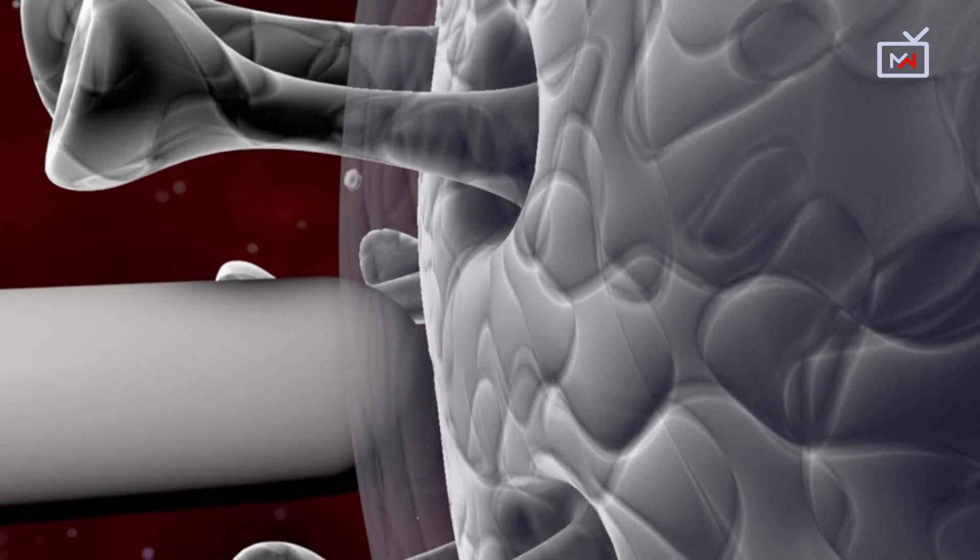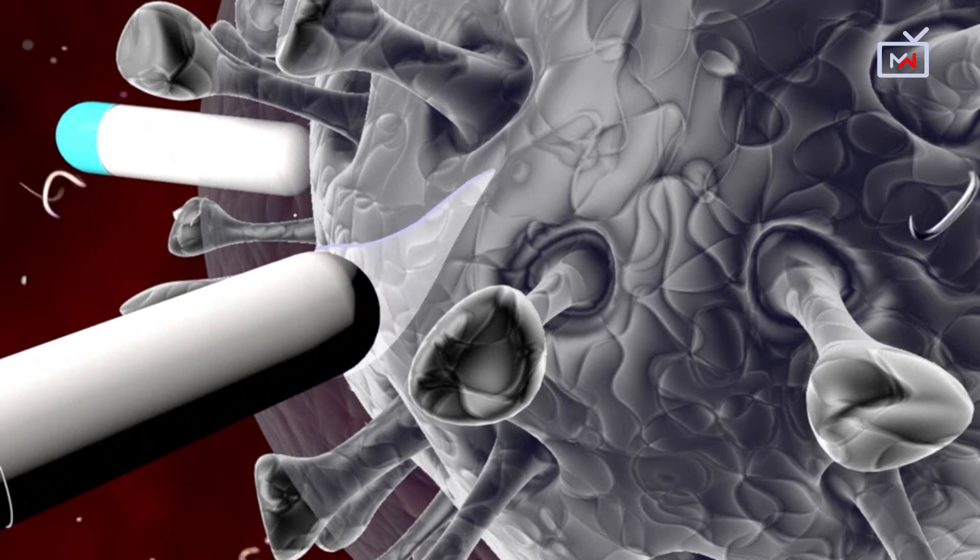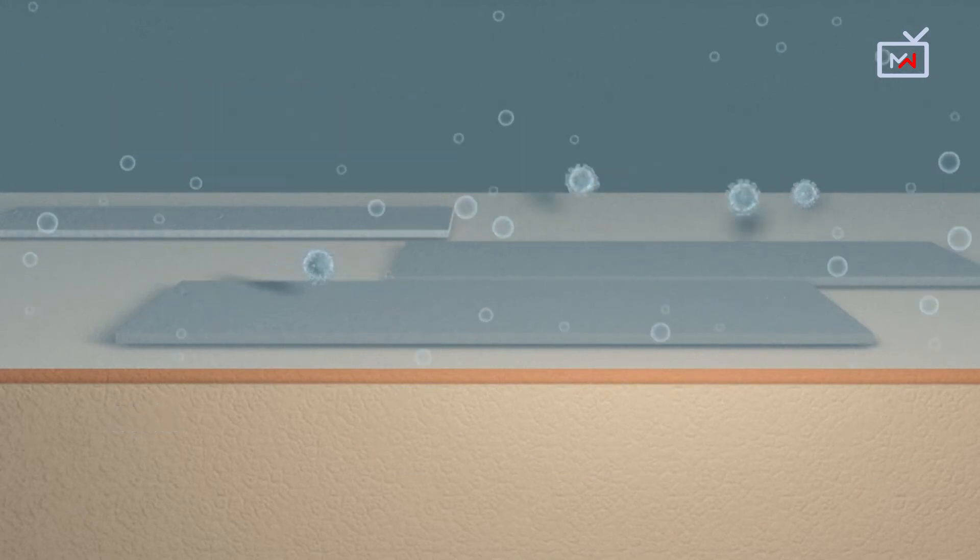The result is that the fatty lipidic membrane of the virus is broken down. The virus becomes inactive and is detached from the skin and washed away when the hands are rubbed and rinsed in water.